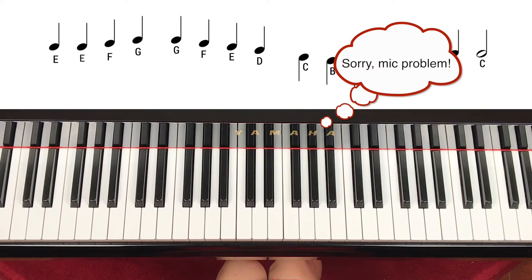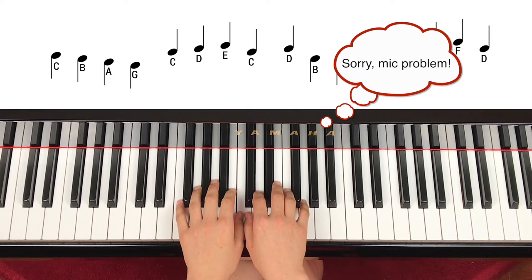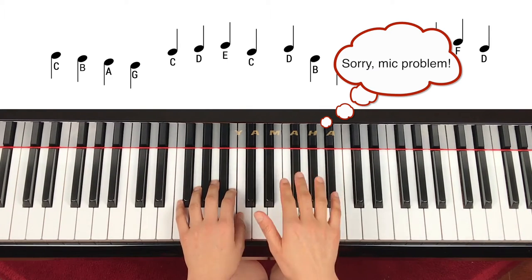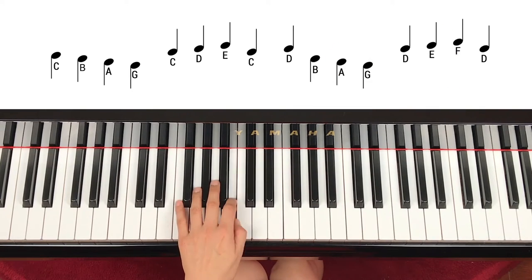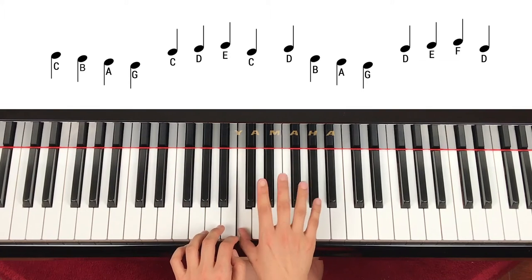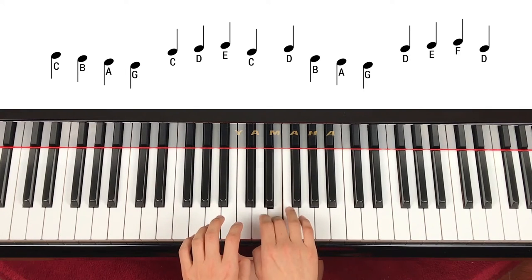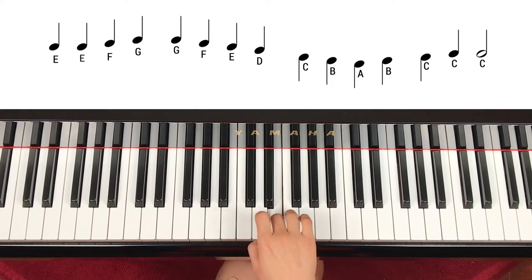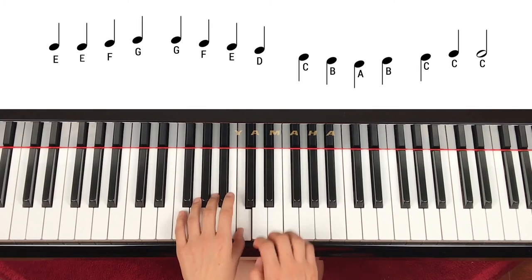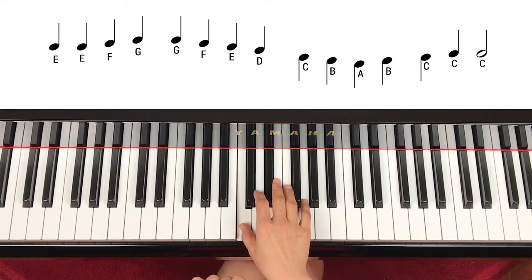Let's go from the beginning, this time a little fast. Place your hand on middle C. Ready? One, two, three, play. C, B, A, G, C, D, E, C, left hand D, E, F, D, E, E, F, G, G, F, E, D. Left hand C, right, one, two.